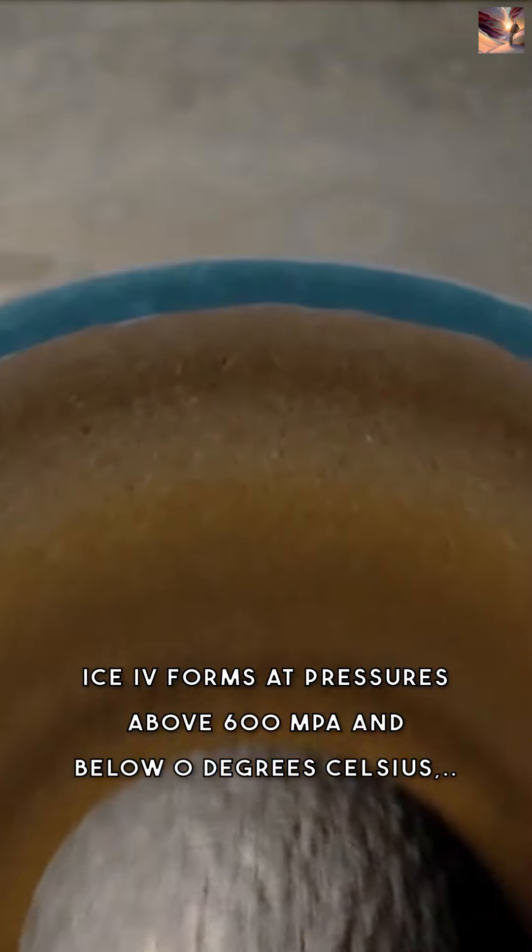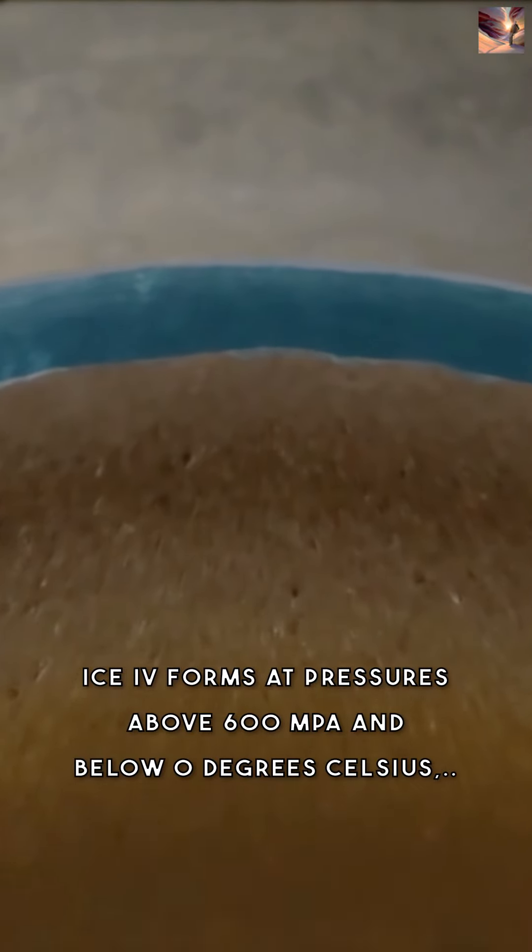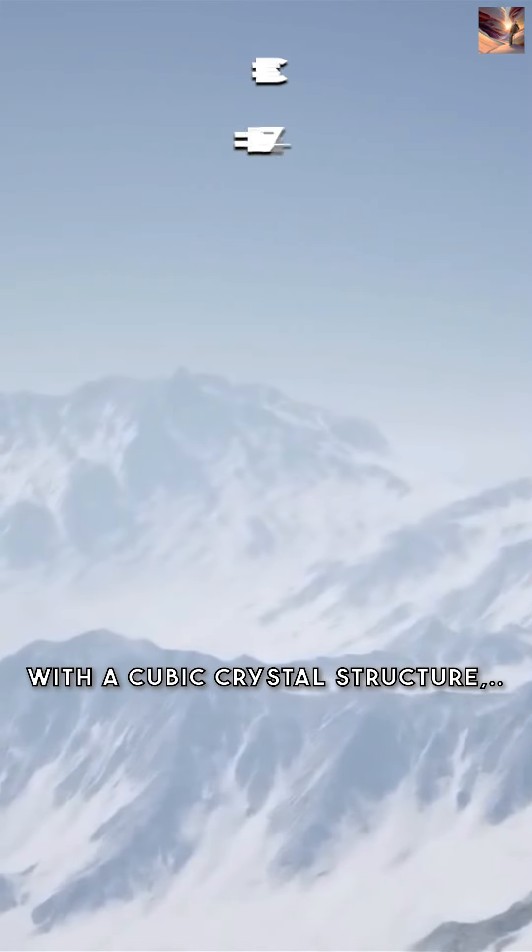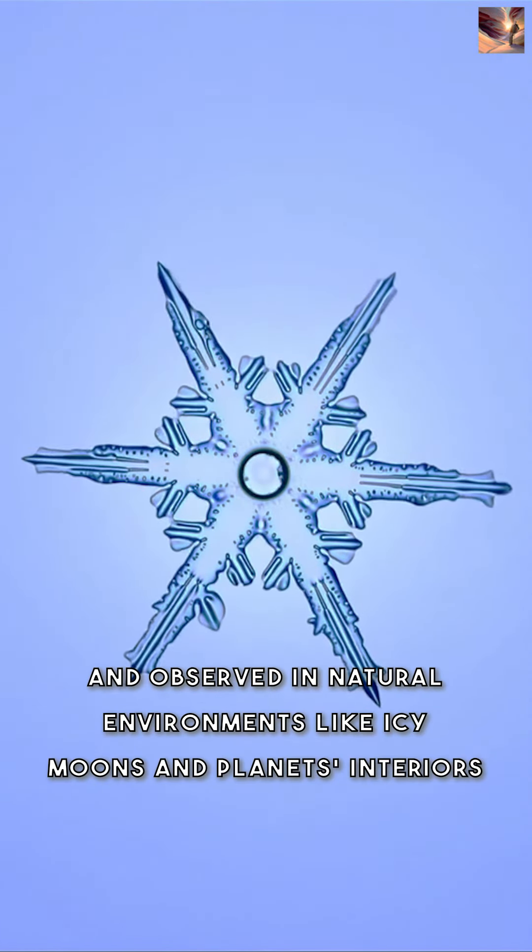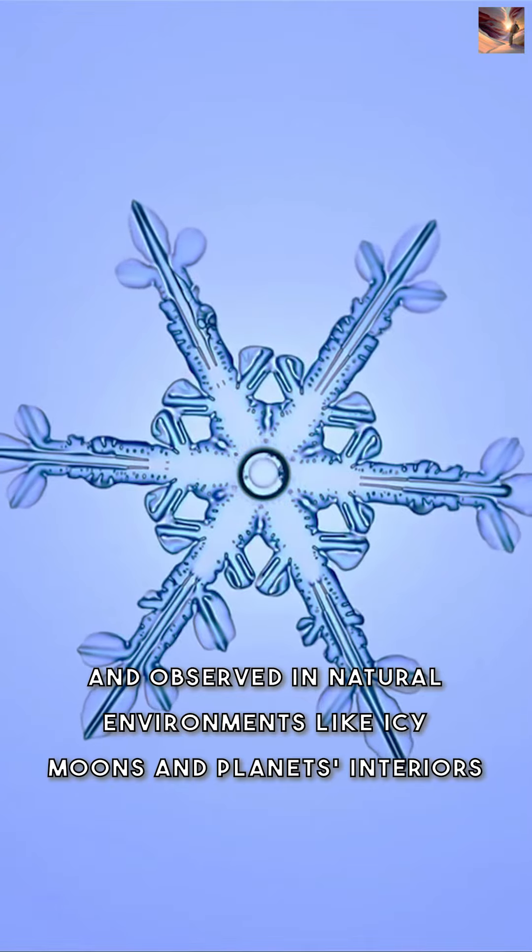Ice 4 forms at pressures above 600 megapascals and below 0 degrees Celsius, with a cubic crystal structure and higher density than previous ice phases. It is observed in natural environments like icy moons and planets' interiors.